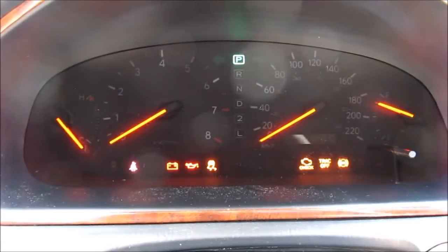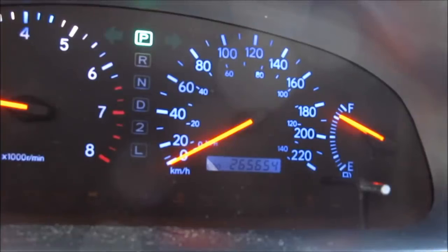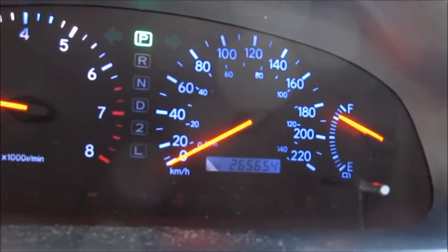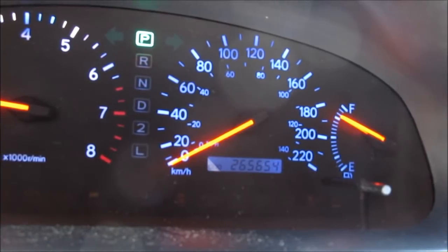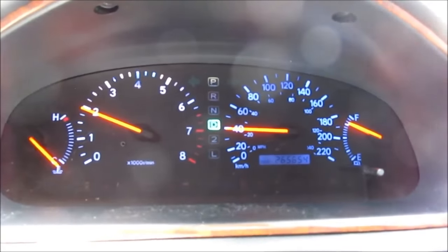I'm going to start it up and test it out. As you can see the gauges are lit up now in the blue color that I've colored it with. As you can see the kilometers now read 265,654 kilometers which is correct for this vehicle. I'm going to take it for a test drive and make sure all the gauges work properly.